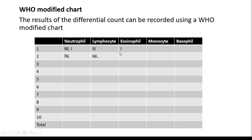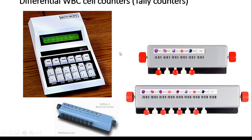Or you can use digital mechanical cell counters or tally counters. When the total of 100 cells have been counted, there is an alarm ringing. The number of each cell type are read from the display window in decimal fraction.